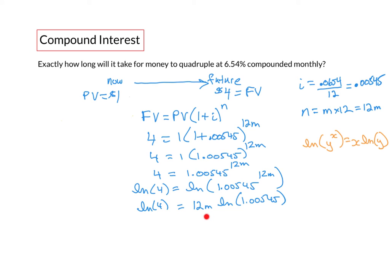Now we have our variable in a more familiar place. And we can isolate it by dividing both sides by ln 1.00545. On the right side these values would cancel out. And on the left side we'll use our calculator to work this out.